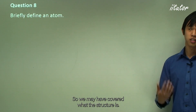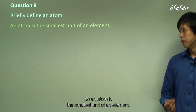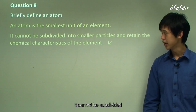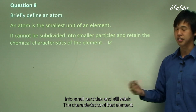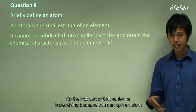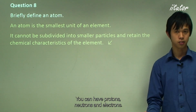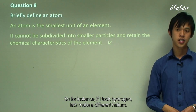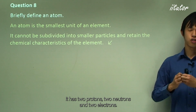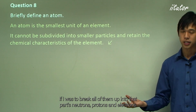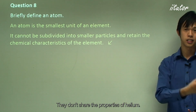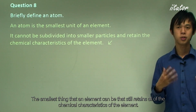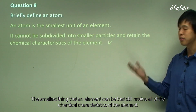Briefly define what an atom is. An atom is the smallest unit of an element — the smallest indivisible object of an element that cannot be subdivided into smaller particles and still retain the characteristics of that element. You can split an atom into subatomic particles like protons, neutrons, and electrons, but none of those particles would retain the chemical characteristics of the element. An atom is the smallest thing that still retains all the chemical characteristics of an element.